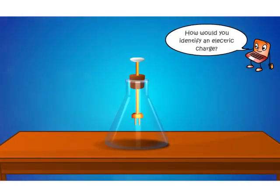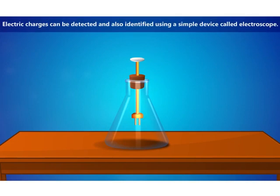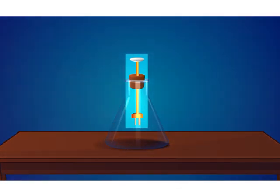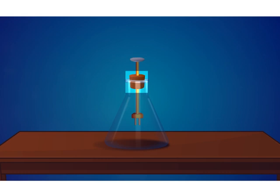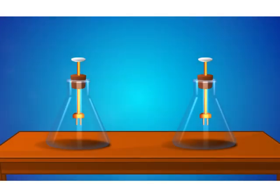How would you identify an electric charge? Electric charges can be detected and also identified using a simple device called an electroscope. The electroscope consists of a copper or aluminium rod, to one end of which a metal disc is attached. To the other end, two thin metal leaves are attached. Gold is used in some cases when the electroscope has to be made highly sensitive. This rod is fitted into a one-hole rubber cork and inserted into a conical flask.